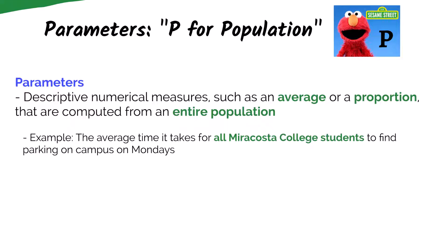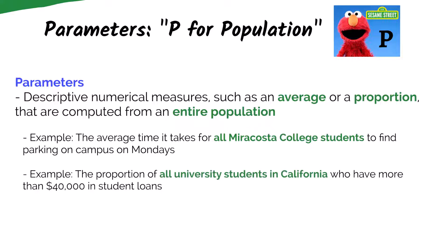An example here is the average time it takes MiraCosta College students to find parking on campus on Mondays. Another example would be the proportion of all university students in California who have more than $40,000 in student loans. So think parameters as information about the population.